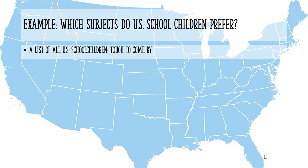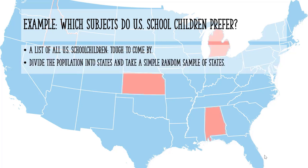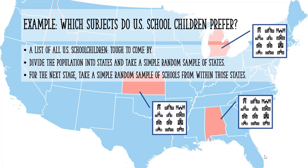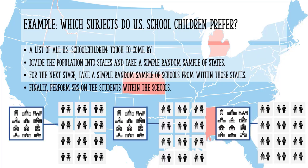Let's say you wanted to find out which subjects US school children preferred. A population list — that is, a list of all US school children — would be almost impossible to come by, meaning you can't take a sample of the whole population. Instead, you can divide the population into states and take a simple random sample of those. For the next stage, you could take a simple random sample of schools from within those states. Finally, you could perform simple random sampling again on the students within the schools to get your sample.